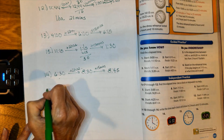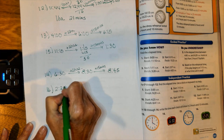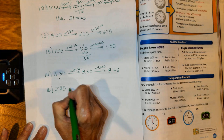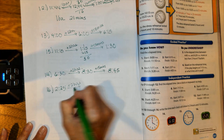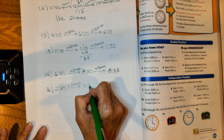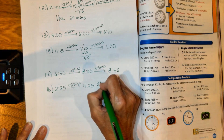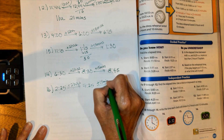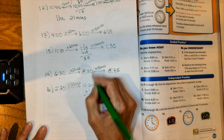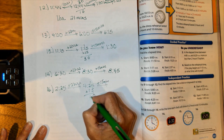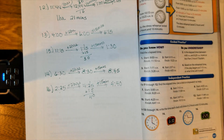One last problem like these — number 16. We have a start time of 2:25. Add 2 hours: 2:25 plus 2 hours is 4:25. Then add your 15 minutes — 4:25 plus 15 minutes gives us a finish time of 4:40.